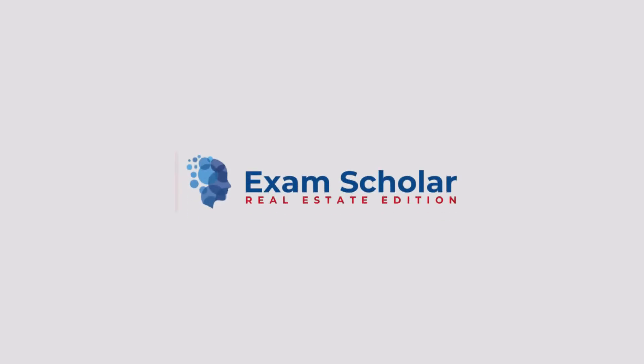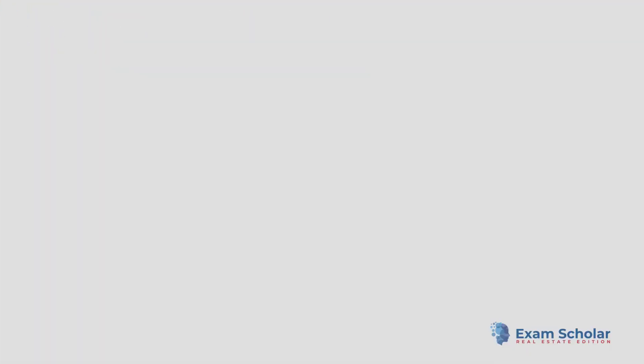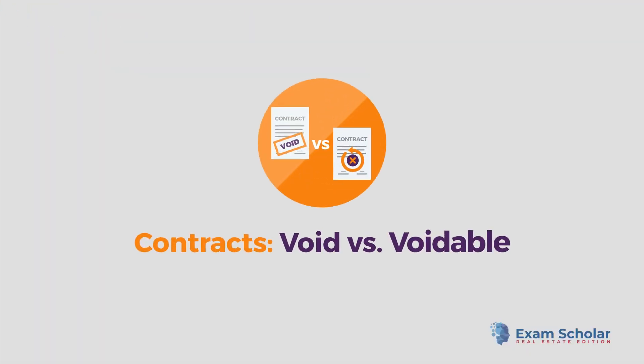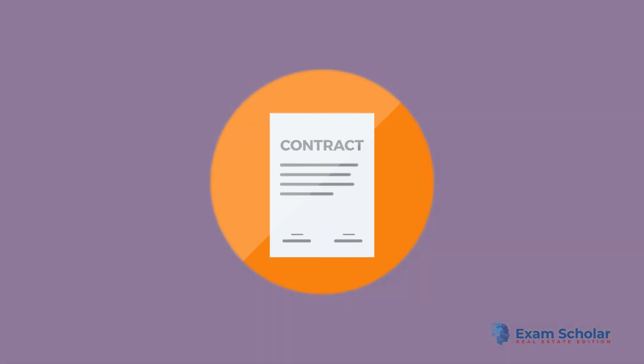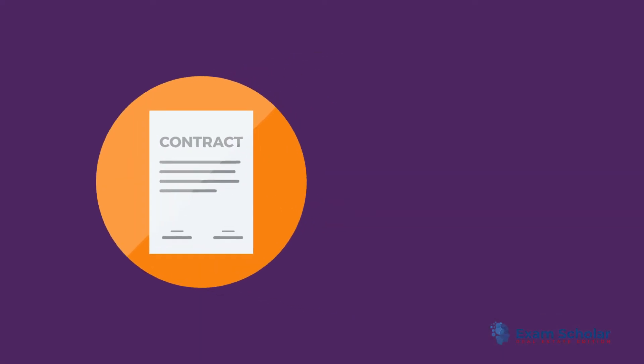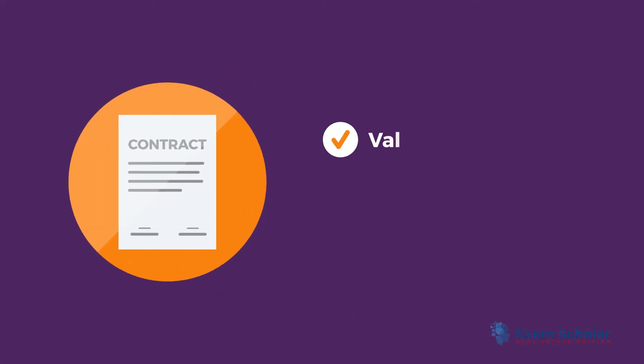Exam Scholar, Real Estate Edition. Contracts: Void vs. Voidable. A contract can be classified as valid, void, or voidable.